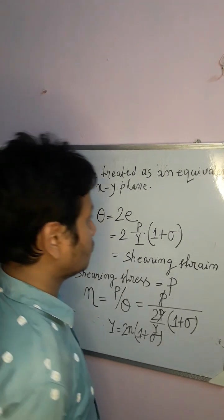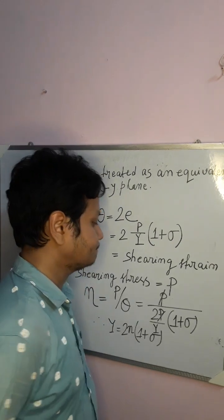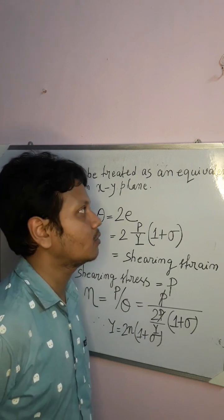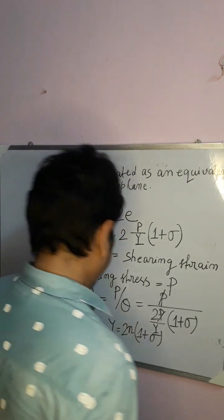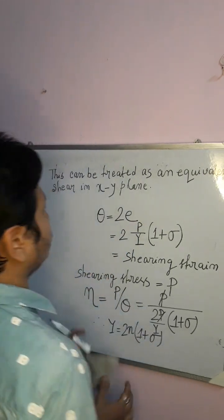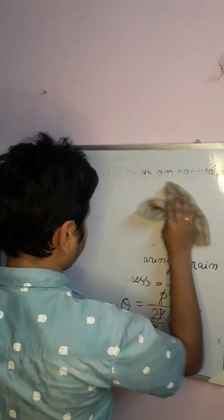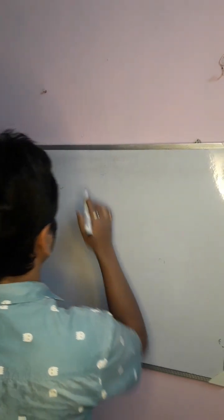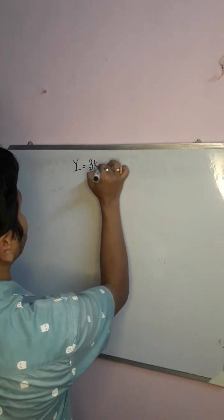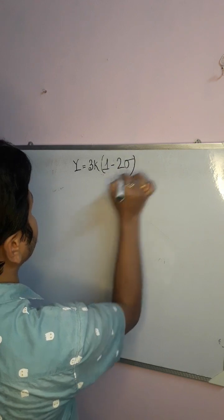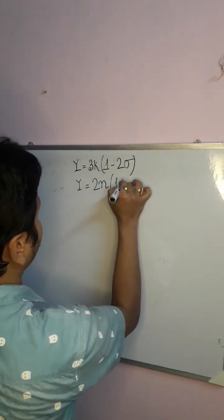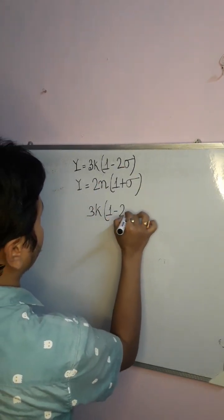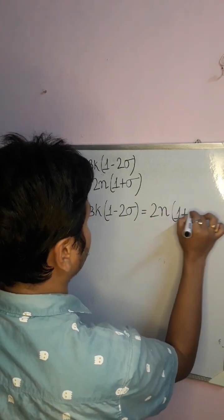So this is how the formula Y = 2η(1+σ) is derived, by considering the shear in the plane in which equal amounts of extension and contraction take place. Now let us derive two other relations. From the first relation: Y = 3K(1−2σ), and from the second: Y = 2η(1+σ). Setting them equal: 3K(1−2σ) = 2η(1+σ), which expands to 3K − 6Kσ = 2η + 2ησ.